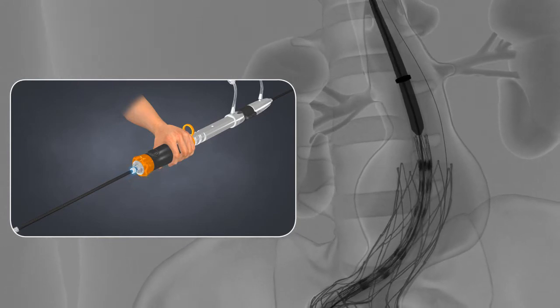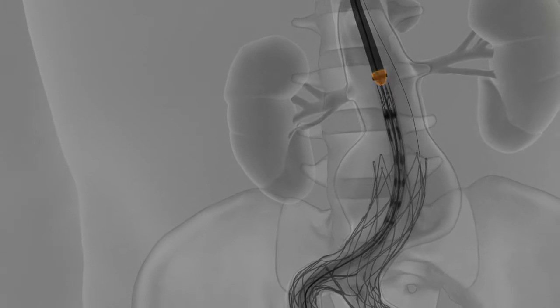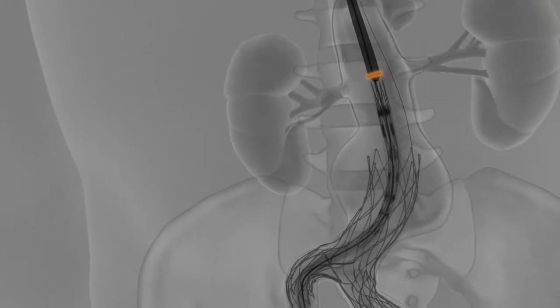Continue to advance the inner core until you hear it click. The base of the radiopaque tip is now aligned with the RO marker band of the introducer sheath.